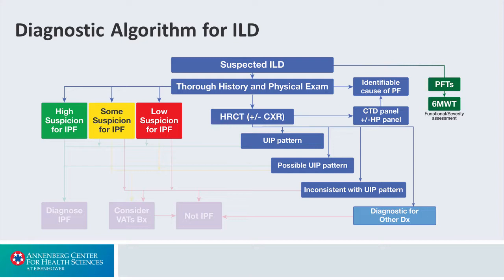What this slide has done is shown you that process. So when we have a patient with suspected ILD, our first role is really just a history and physical. And then we ask ourselves, is there a high suspicion for IPF, some suspicion, or a low suspicion?